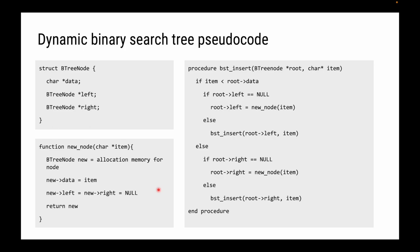In pseudocode, we have our structure, a function for creating a new node and allocating memory for it, and our insertion function. If the item is less than the root's data, then if the root has no left child, we add a new node as the left child. Otherwise, we recursively call the insertion method again using the left child as the new subtree root. If the item is greater than the root's data, we check if there's a right child — if not, we add the item at the right; otherwise, we recursively call insertion on the right child subtree.